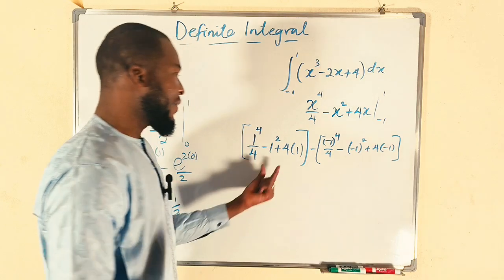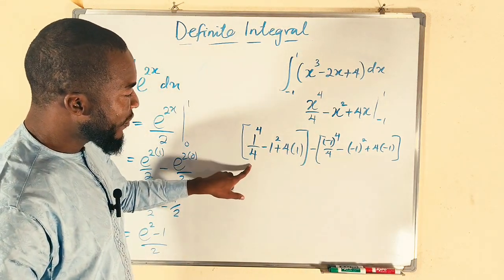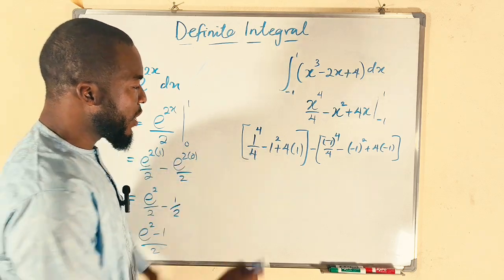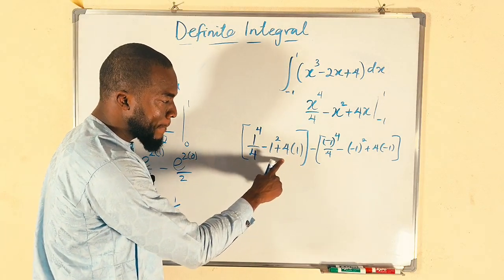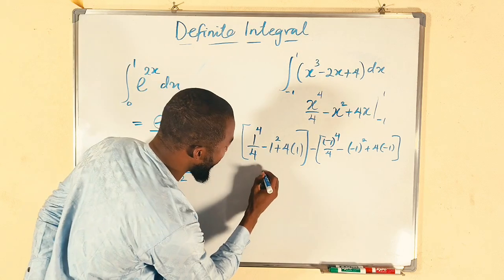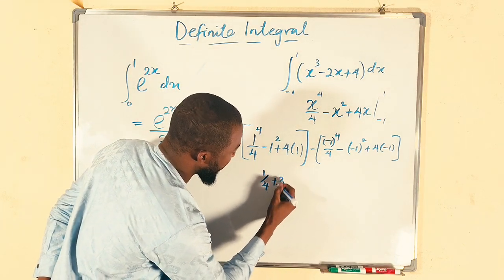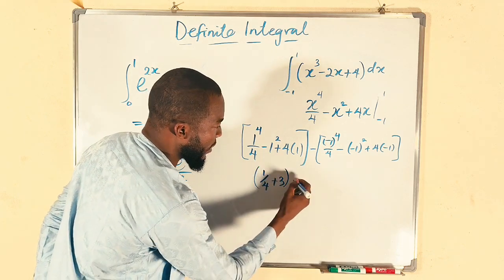Let's simplify this and this separately. We have 1 divided by 4, we have negative 1, we have 4. So we have 4 minus 1, which is 3. So we have 1 over 4 plus 3 here minus